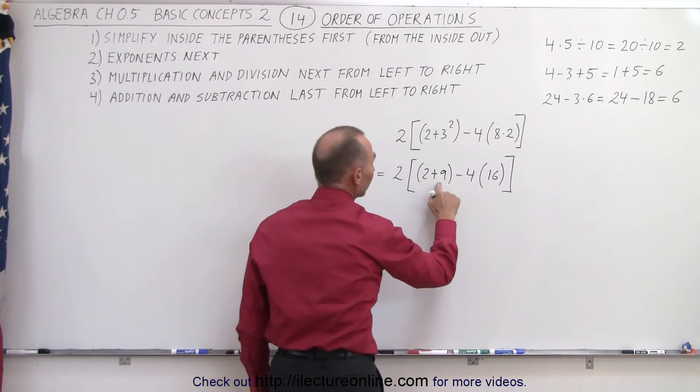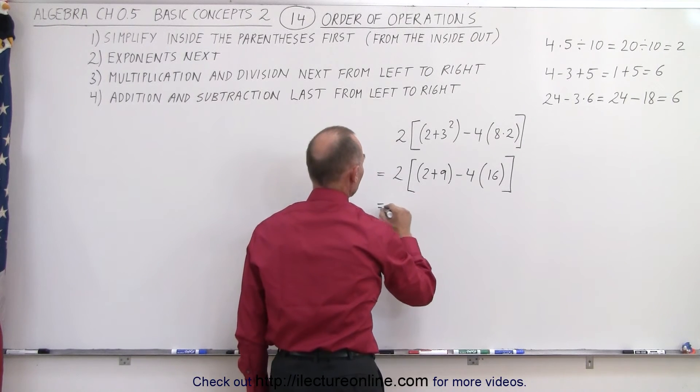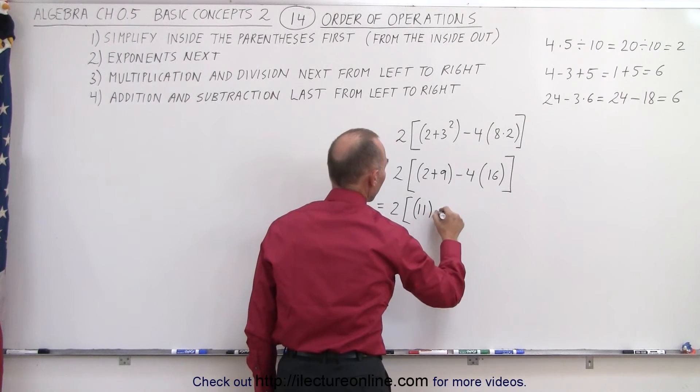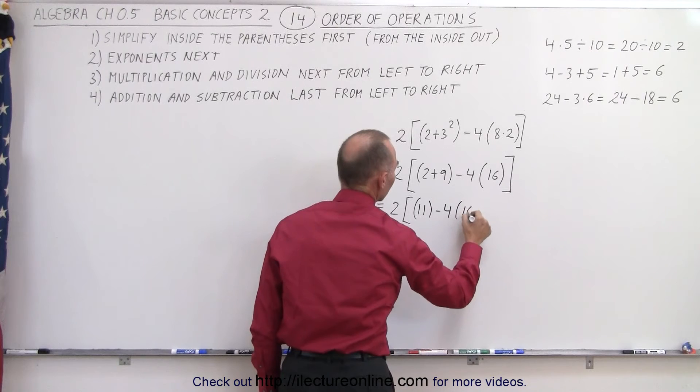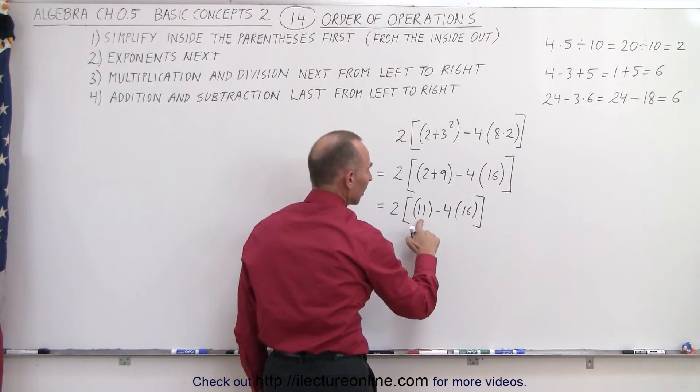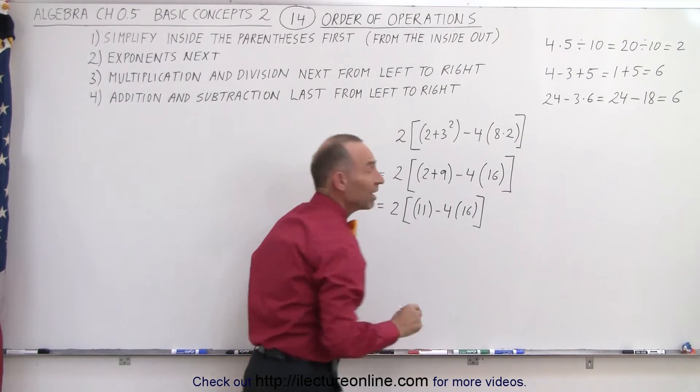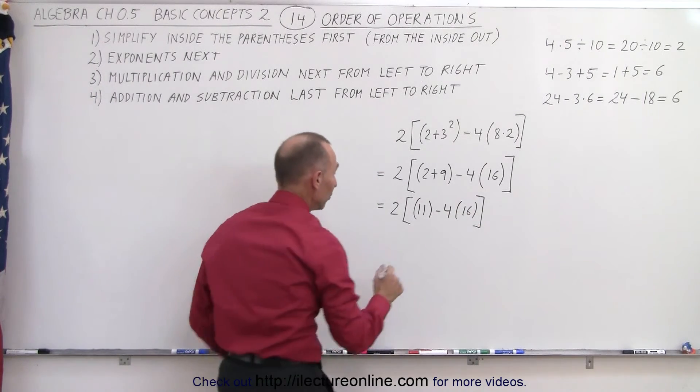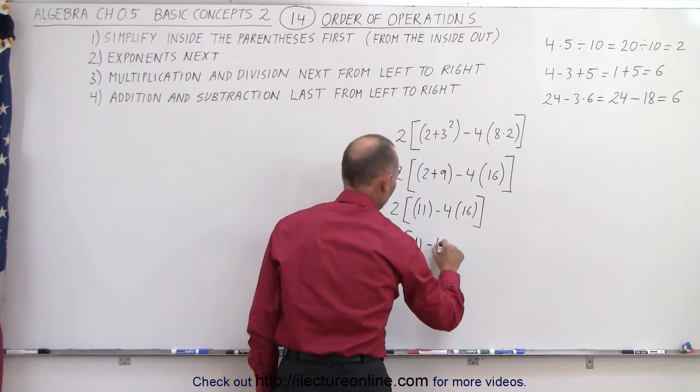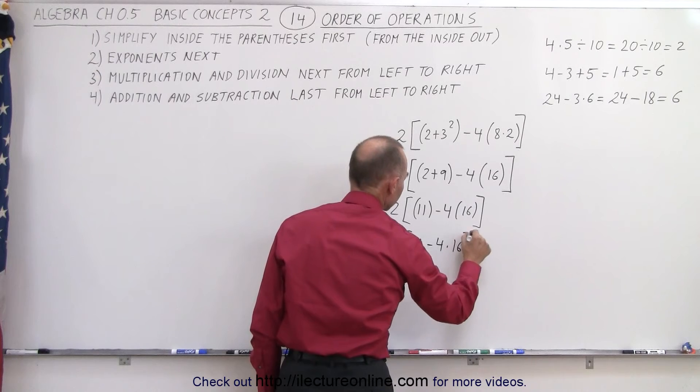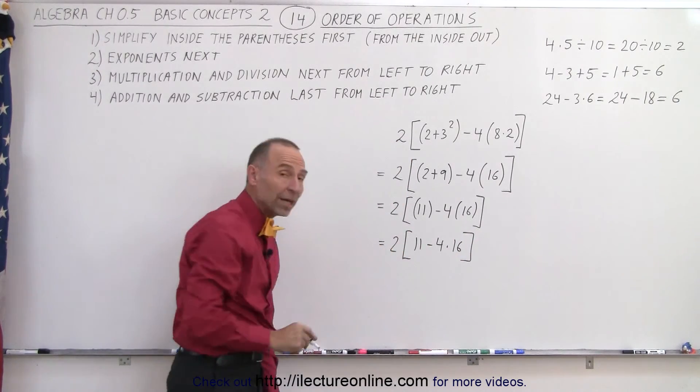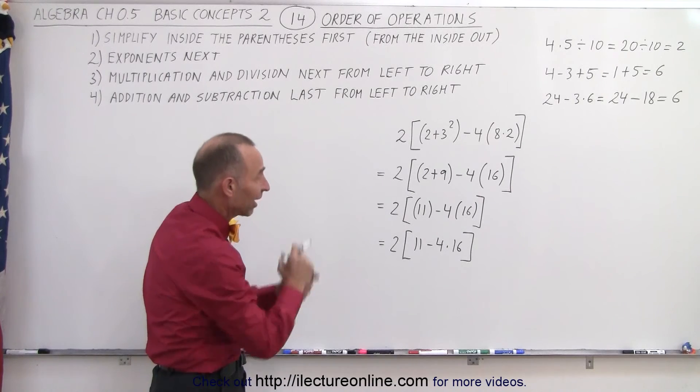Next, we still need to simplify what's inside here. So we get this is equal to 2 times. 2 plus 9 is 11. So we have 11 minus 4 times 16. So notice here, inside the brackets, we have simply the number 11 minus 4 times 16. Notice we can write it like this. We can take the parentheses away and write this as 2 times 11 minus 4 times 16.